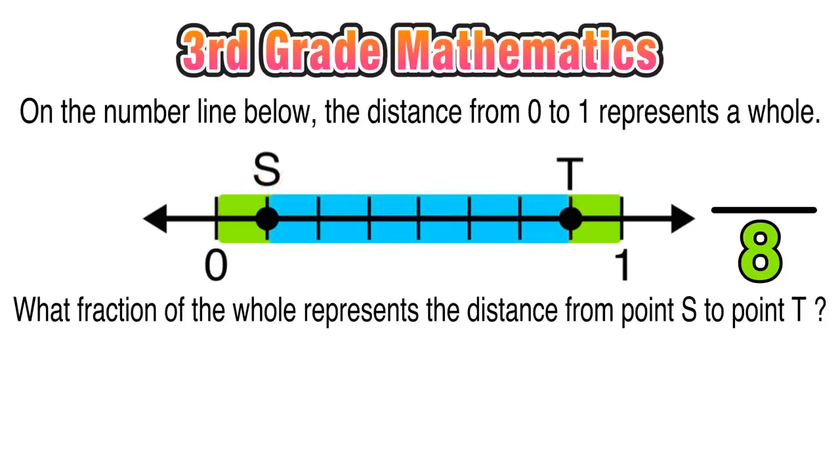And what we want to find is the distance between S and T. That is the part of the whole and is going to be our numerator. So we count that distance as 1, 2, 3, 4, 5, 6. So our whole is 8 parts. And the distance between S and T is 6 of those 8. So 6 is going to be in our numerator.